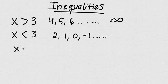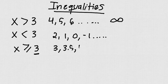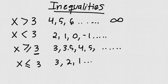Then let's say that they tell me x must be greater or equal than 3. That is all the numbers, including 3. Anytime you have a line underneath the symbol, that is including the number. So in this case, it's going to be 3, maybe 3.5, 4, 5, and so on. When I have it the other way, it is the exact same thing — I'm going to have 3, 2, 1, and so on.